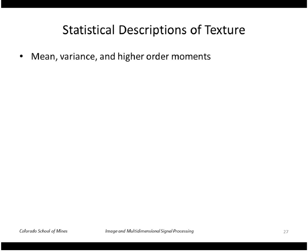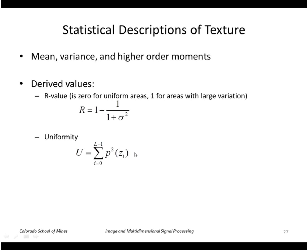So first, let's look at statistical descriptions. So we can take the mean of a region, the variance, and the higher order moments, as we've seen. We can also compute some derived values, such as this R value, which is just the variance of the region. So this value should have zero for uniform areas and one for areas with large variation. This derived value called uniformity sums the probability squared of each intensity value in the region. And the entropy, of course, is just the probability of each intensity value times the log of that probability.